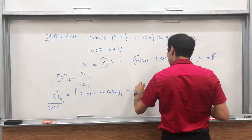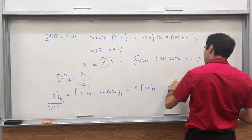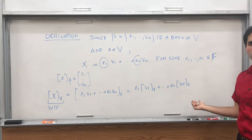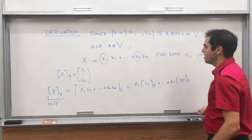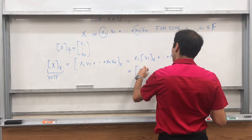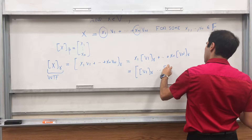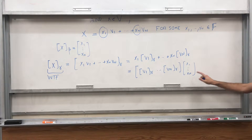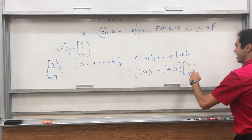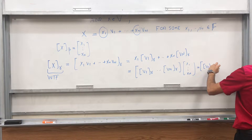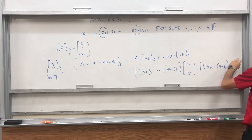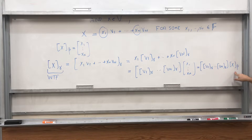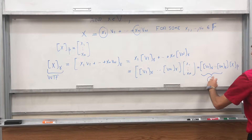Just take this equality and put the new coordinates on there. x with respect to gamma equals x1·(v1 with respect to gamma) + ... + xn·(vn with respect to gamma). This is almost like a dot product we can write as a matrix product: the matrix with columns [v1]_gamma up to [vn]_gamma, times the vector (x1, ..., xn). And now — ding ding ding — that vector is precisely x_beta. So we're left with the matrix [v1|gamma, ..., vn|gamma] times x_beta, which is precisely the change of coordinates matrix Q from beta to gamma.